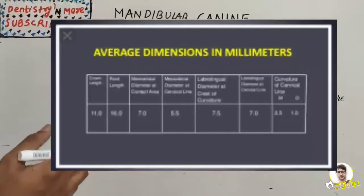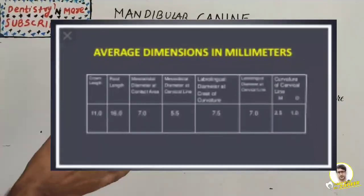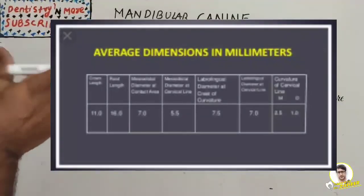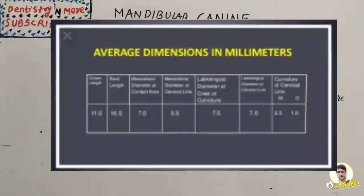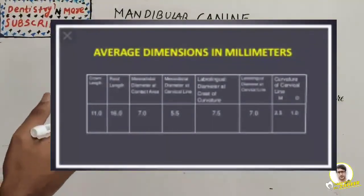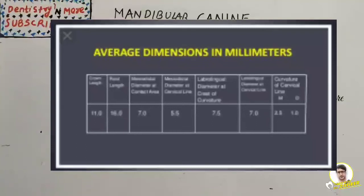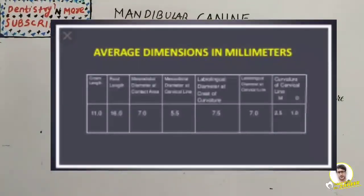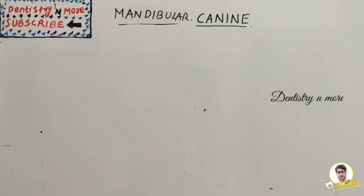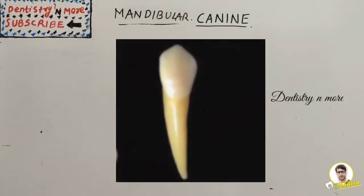The dimensions are: crown length is 11 mm, root length is 16 mm. Mesial-distal diameter at contact area is 7 mm and at cervix is 5.5 mm. Labio-lingual is 7.5 mm at contact area and 7 mm at the cervical line. The curvature of the cervical line is 2.5 mm on the mesial and 1 mm on the distal.